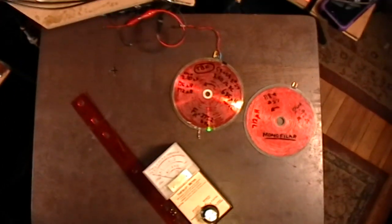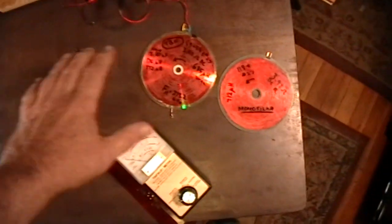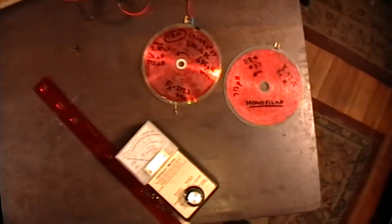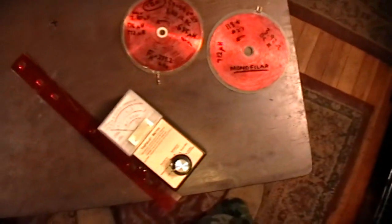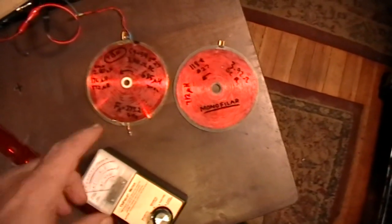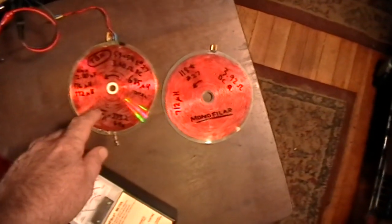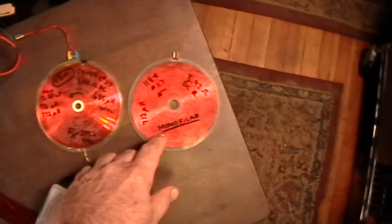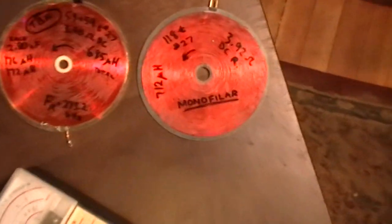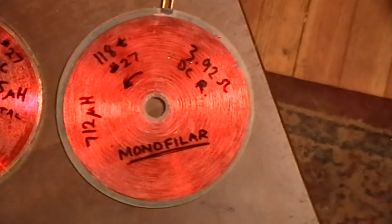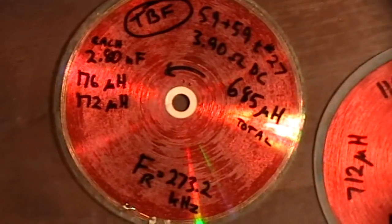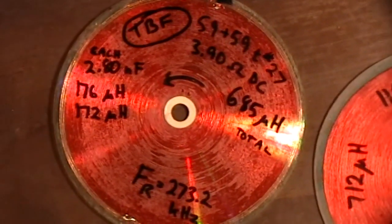Good evening and welcome to my laboratory. What you're looking at here is a test setup that I'm going to use to compare the magnetic fields produced by a Tesla bifilar coil compared to an ordinary monofilar flat pancake coil with the same number of turns and approximately the same DC resistance.